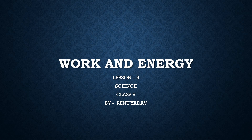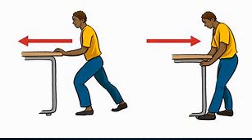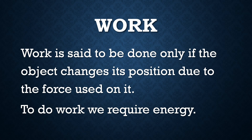Good morning students, myself Renu Yadur, and today I will teach you Science Lesson 9: Work and Energy. Children, can you see here in the diagram — one man is pushing the table and the other man is pulling the table. What will be the result of this work? The result will be that the position of the table will be changed. Work is said to be done only if the object changes its position due to the force used on it.